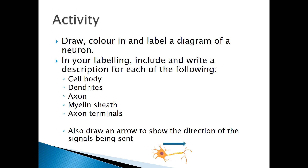That's it for this lesson. At this point I usually get my students to draw, colour in, and label a diagram of a neuron, including a description for each of the following key structures: the cell body, the dendrites, the axon, the myelin sheath, and the axon terminals. I also encourage students to draw an arrow to show the direction the signal is travelling as it moves through the neuron.